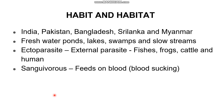Now, the habit and habitat. Habitat is the natural home — where it is found. The Indian cattle leech is found in India and neighboring countries: Pakistan, Bangladesh, Sri Lanka, and Myanmar. It lives in freshwater ponds, lakes, swamps — where water and soil are both found — and in slow-moving streams, water bodies with a slower flow.